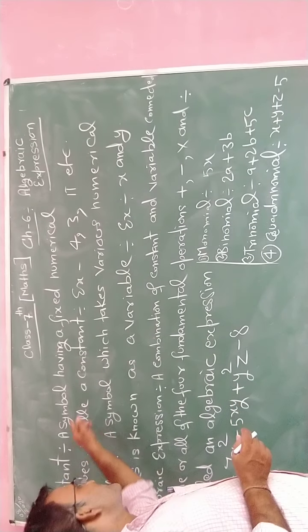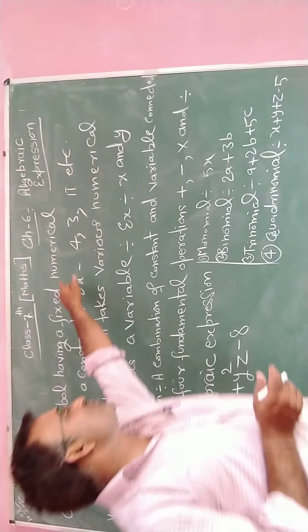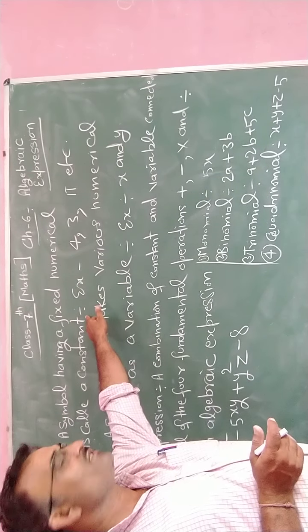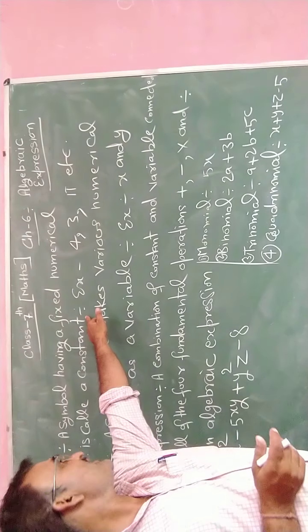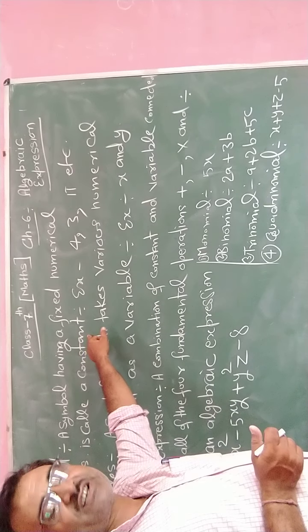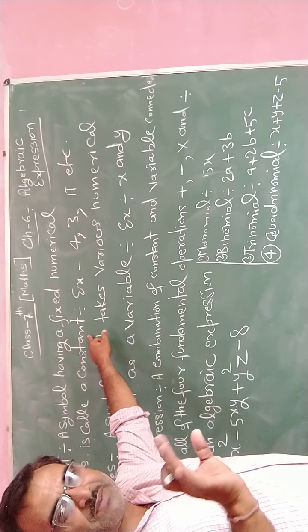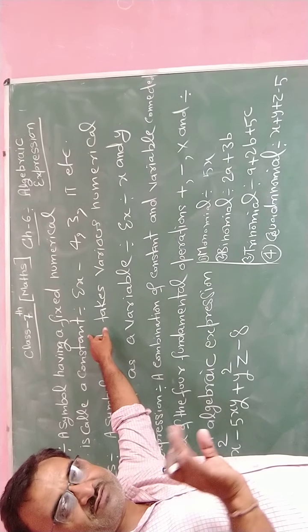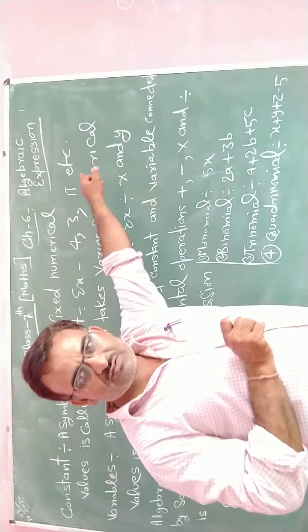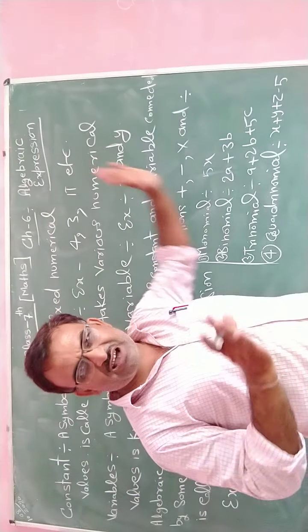So, a symbol having a fixed value is called a constant. This symbol hiding a constant value is called a constant.